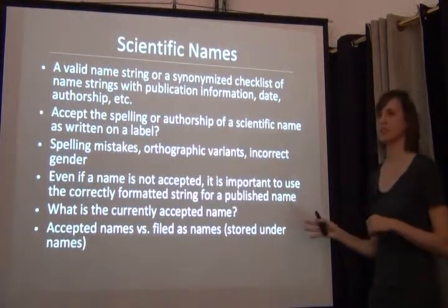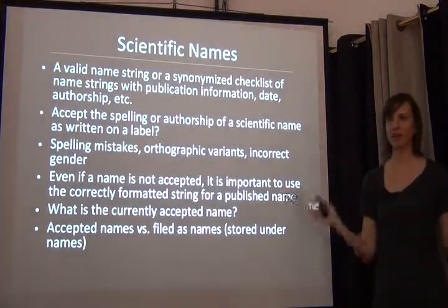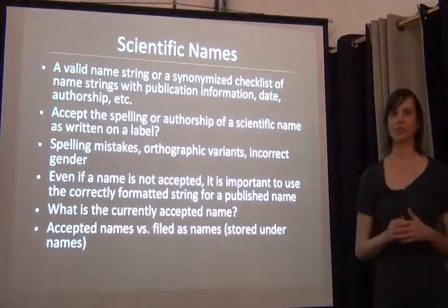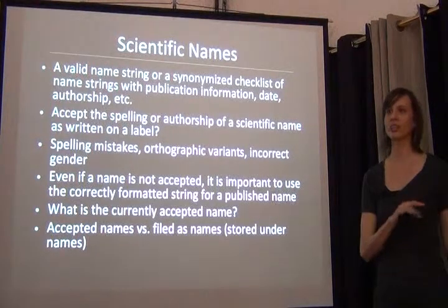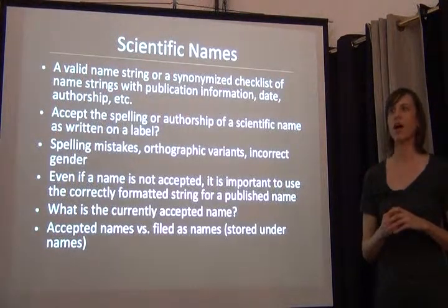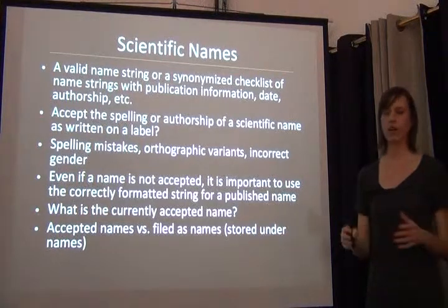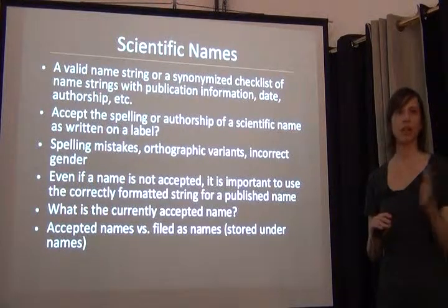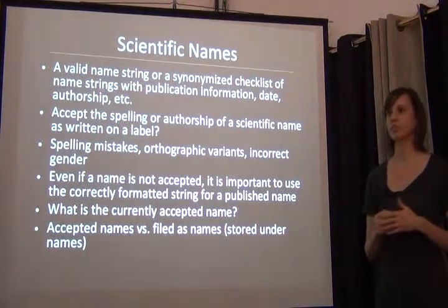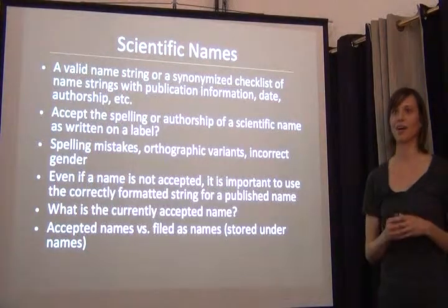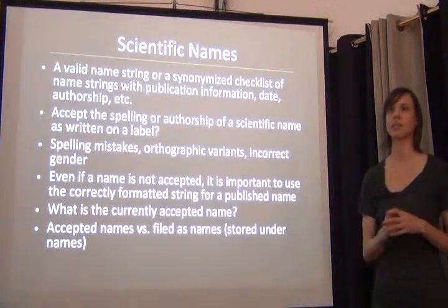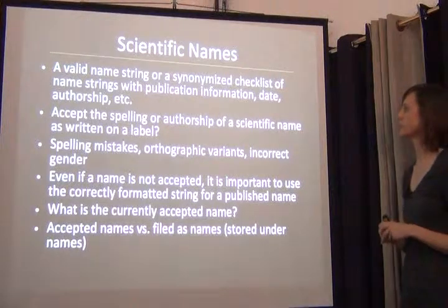Scientific names are where it gets a bit more complicated and a bit more fun, because we're talking about name strings. When you start entering name strings in a database without an authority file, especially when going directly off a label, you'll be dealing with so many different orthographic variants — not even just spelling, but authorships. In plants we standardize the authors, so Linnaeus is supposed to be 'L.' but a lot of people write out Linnaeus, giving you so many different variants of a name string.